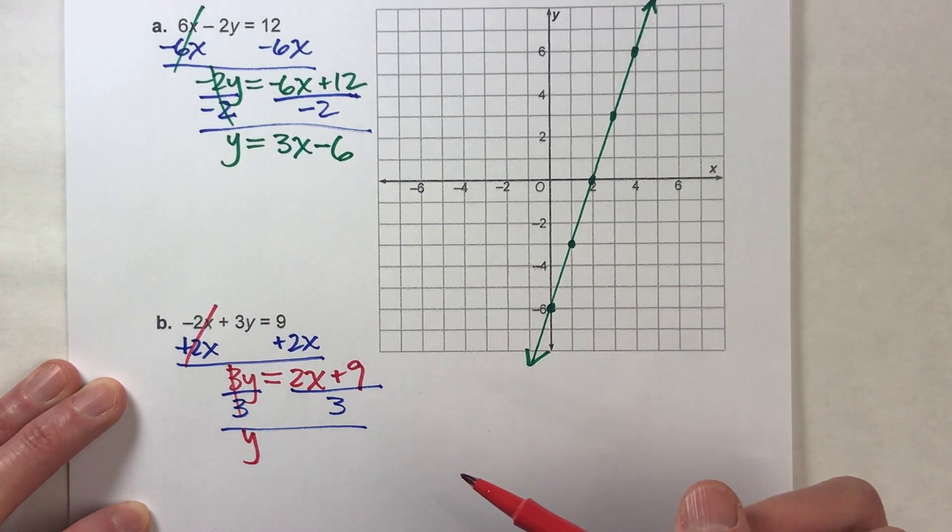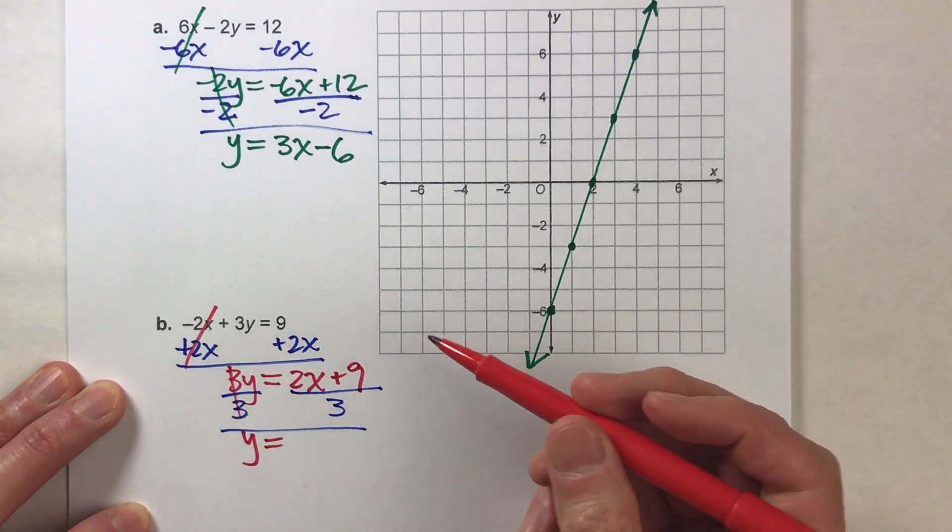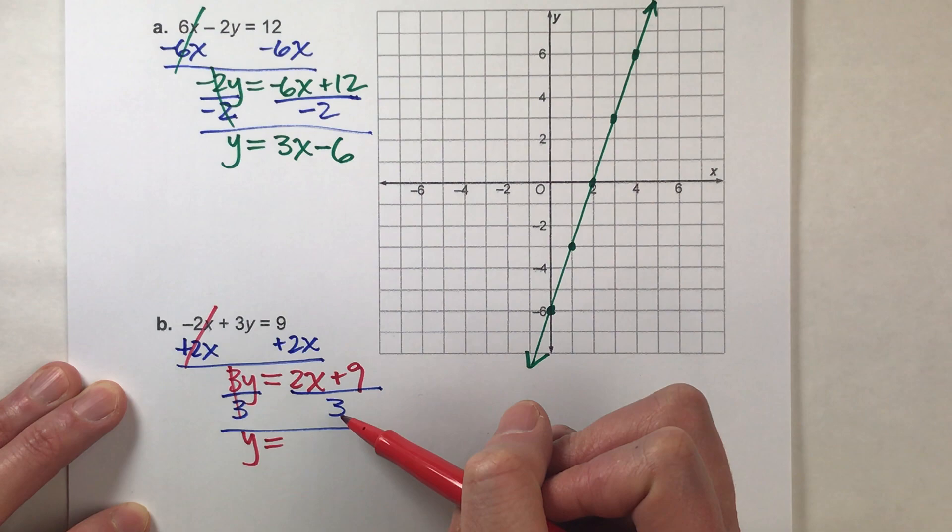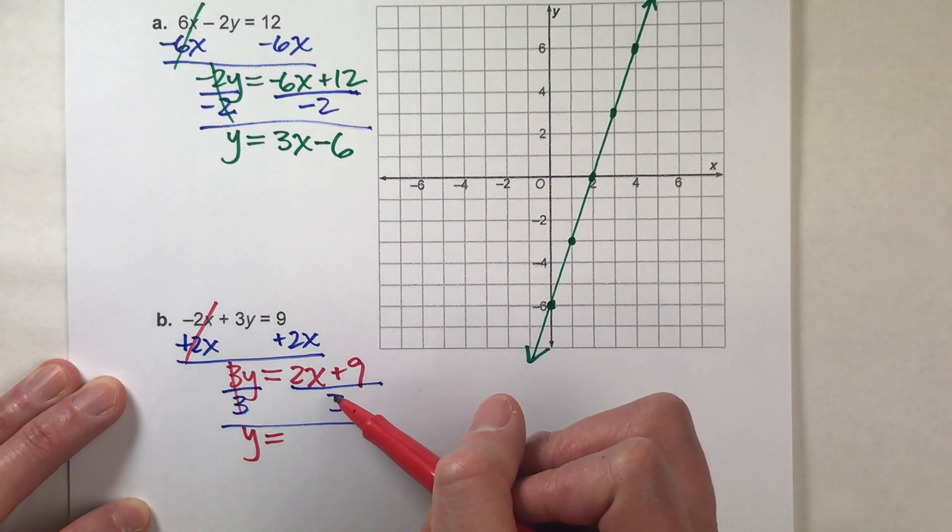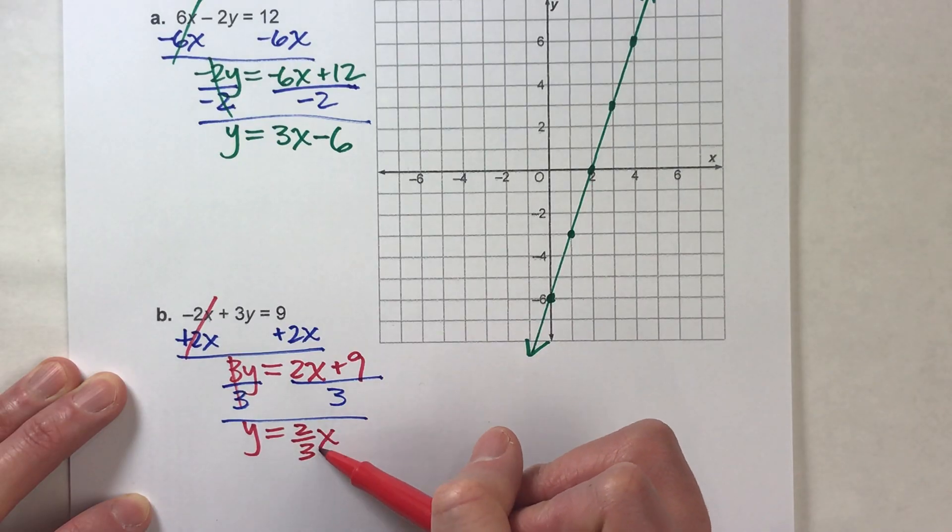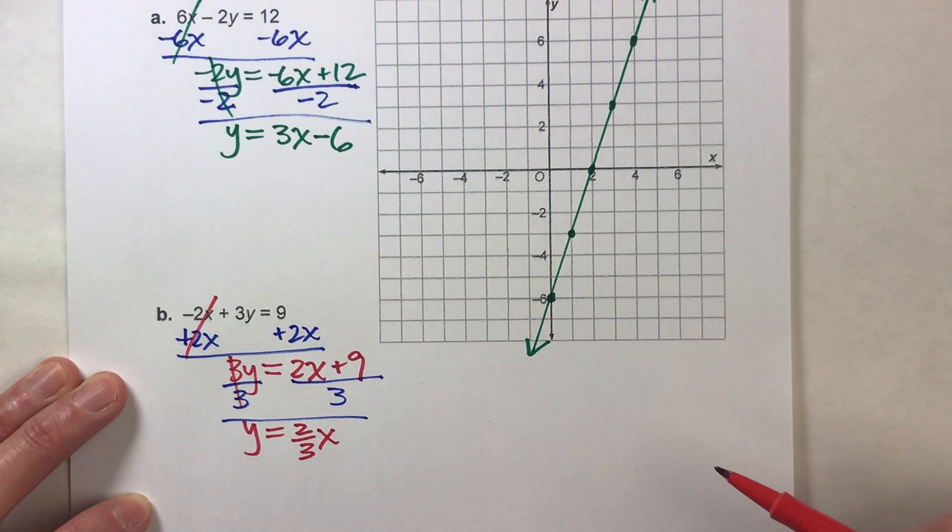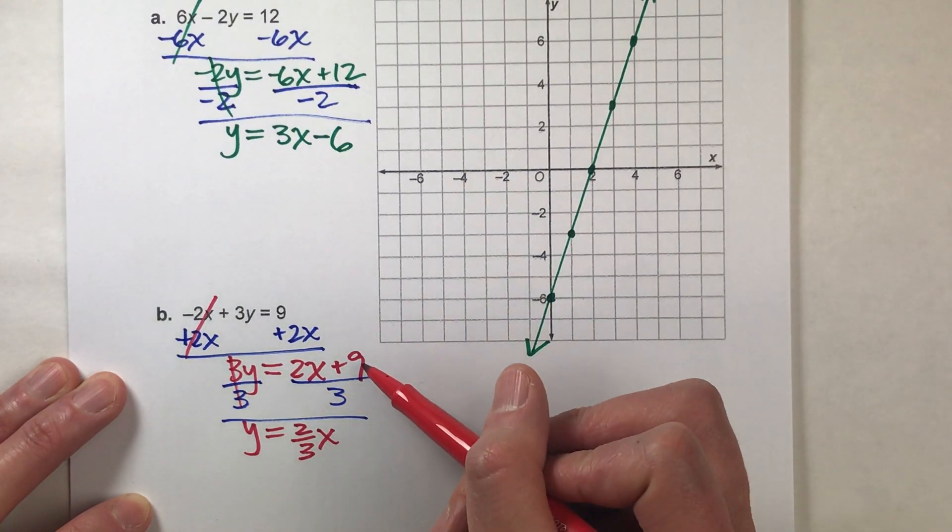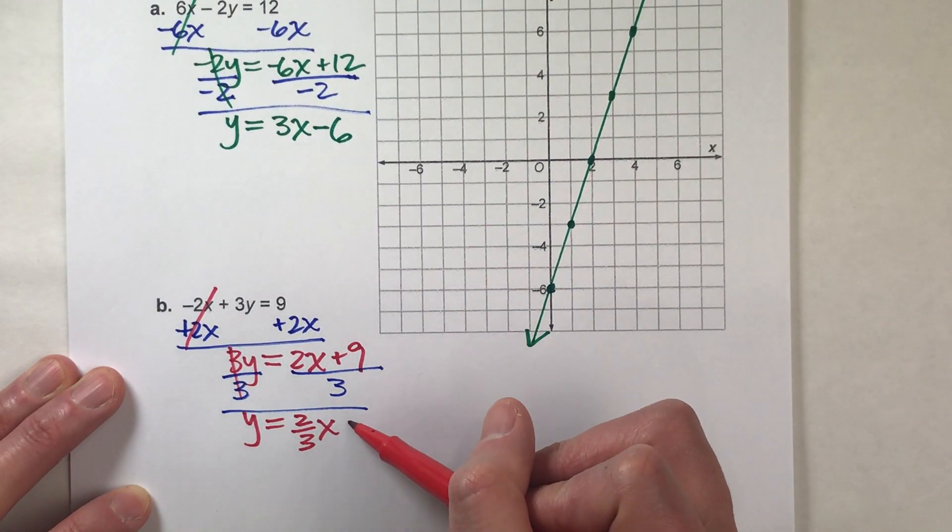3s undo each other, y drops down, equals drops down. Now here's where it gets tricky. 2 divided by 3 is not a whole number, so I'm going to keep 2 divided by 3 as 2 thirds with the x next to it. Alright, so keep it as a fraction, it'll be easier to graph in a second, you'll see why. Positive 9 divided by 3 is positive 3.